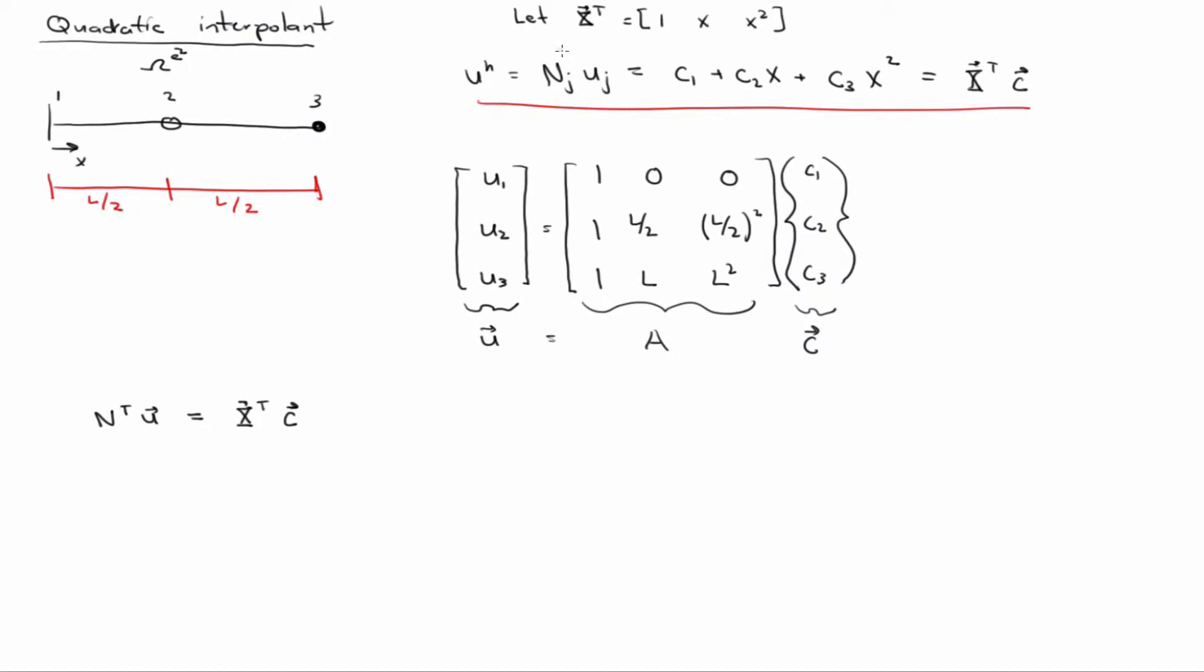So I'm just going to move down here and say that this is n transpose u equal to x transpose c. That's just restating this equation. This is n transpose u, x transpose c. But now I have an equation for u, u is ac, so if I plug that in, say that n transpose times c is equal to x transpose c, the c's will cancel, right?